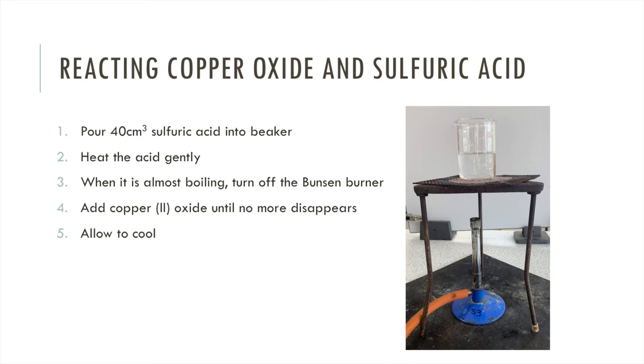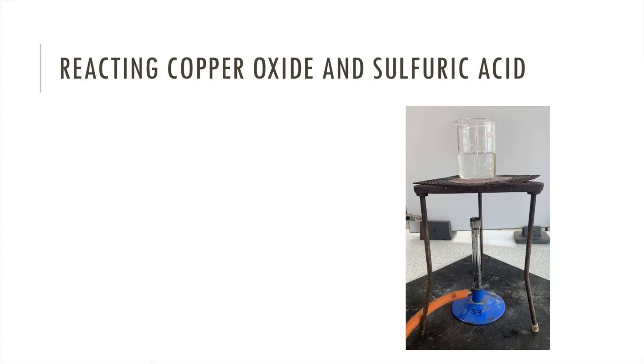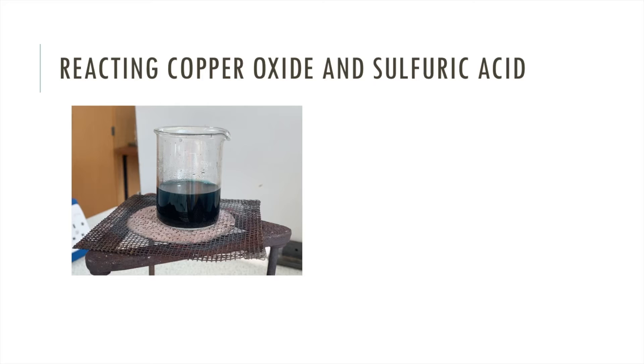So you may be asked to draw apparatus in your exam. And to do this, you use a pencil and a ruler. And this is how you would draw the gauze and the tripod. There's no need to draw a Bunsen burner. All you do is draw an arrow with the word heat. And then your beaker and liquid is simply drawn like this. And make sure you label your apparatus appropriately. Once your copper oxide has been added to the sulfuric acid, it looks like this.